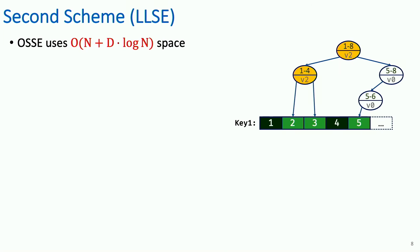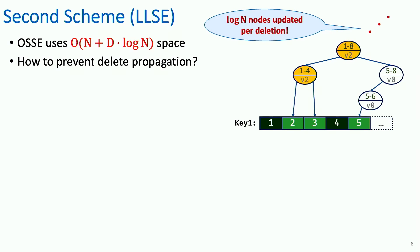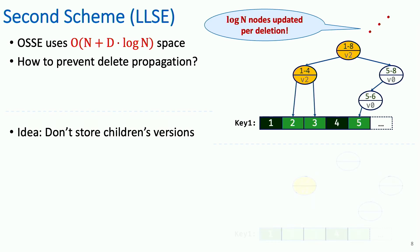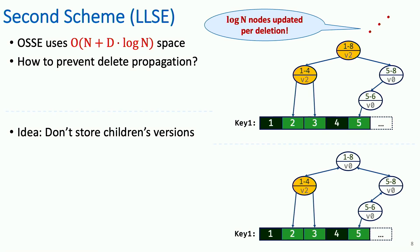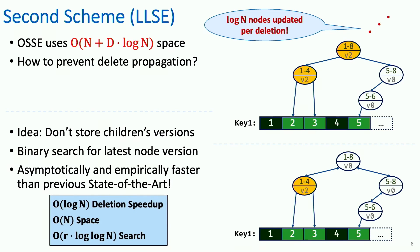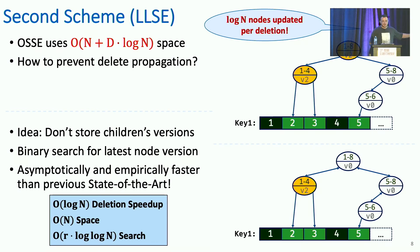We also have a second scheme which doesn't have the log n additive space overhead. The idea is simple: we don't store the children's versions, so each deletion means one node changes, and then we binary search for the latest version of each node. This second scheme is still asymptotically and empirically faster than the previous state-of-the-art, which had O(R log n) search.